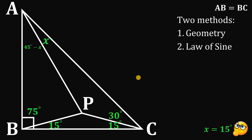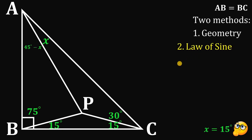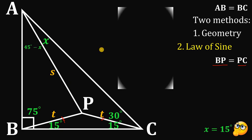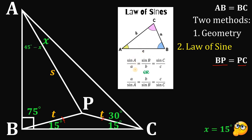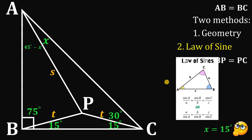Now for the second method using the law of sines and a calculator technique. To use the law of sines, we note that side BP must equal side PC — let's call both T. Let segment AP equal S. The law of sines states: sine of angle A over side a equals sine of angle B over side b equals sine of angle C over side c.